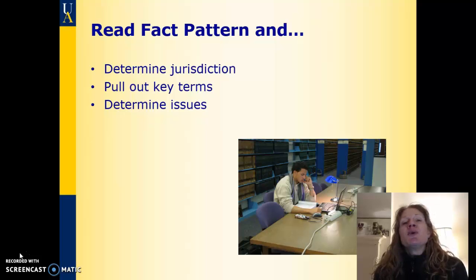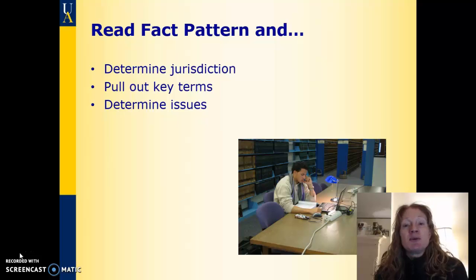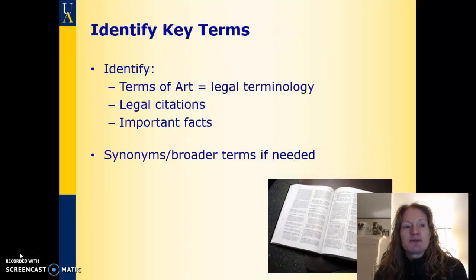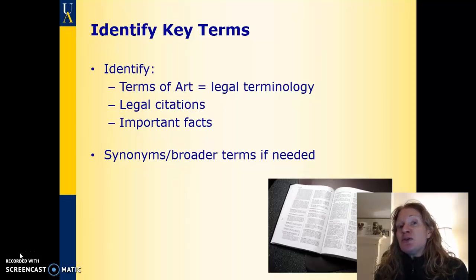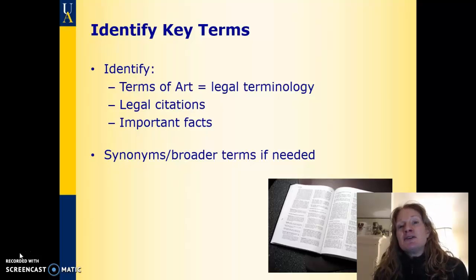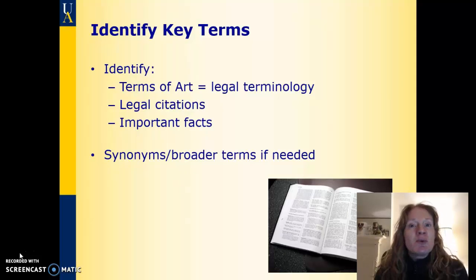You're going to determine what your issues are, because that's going to help you write a good search statement and focus in on what you're really looking for — what's the question you really want to answer with your research. When identifying key terms, if your fact pattern gives you any terms of art, those could be good key terms for searching. Terms of art are legal terms, things like negligence, will, statute of frauds, adverse possession, or anything like that.